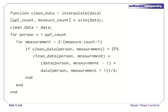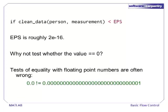For each matrix element, which we index by the variables person and measurement, we check for a very small value. If the value is nearly zero, we reassign it to the average of the left and right values. Note that if those values are also zero, then linear interpolation might still return an erroneous value. In our test for values that are zero, we do not use the most obvious solution, which is to test for values that are equal to zero using the equals comparison. This is because MATLAB is using floating point numbers, and floating point equality tests can be unreliable.